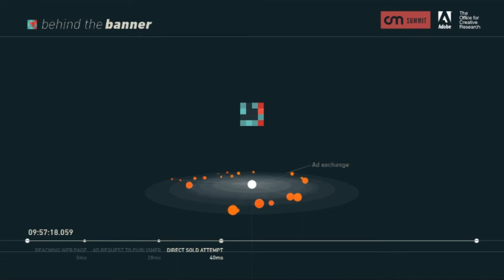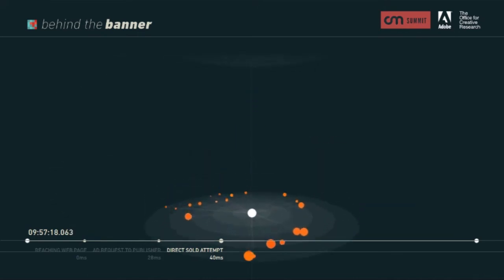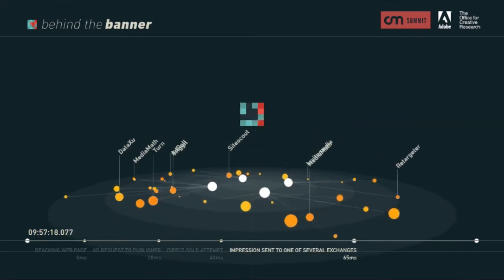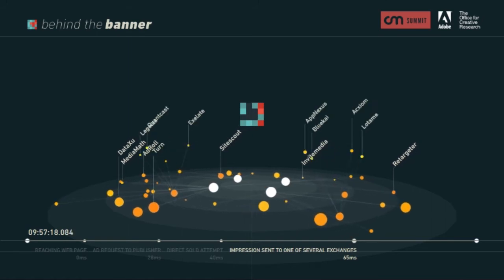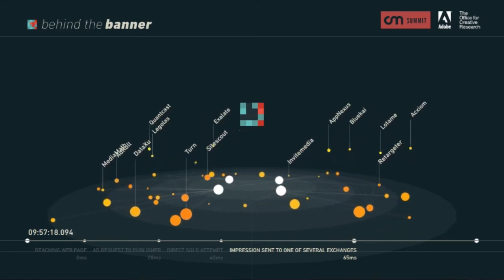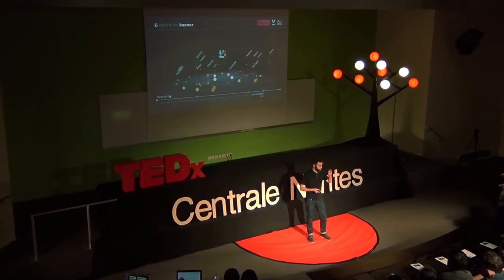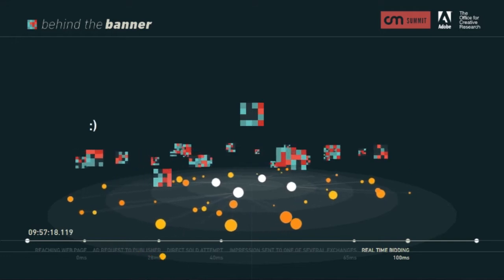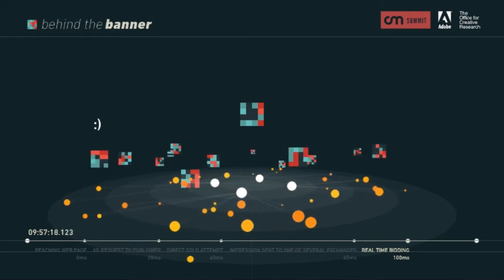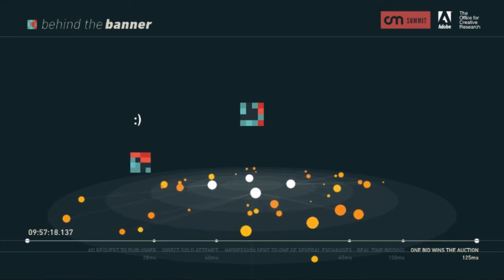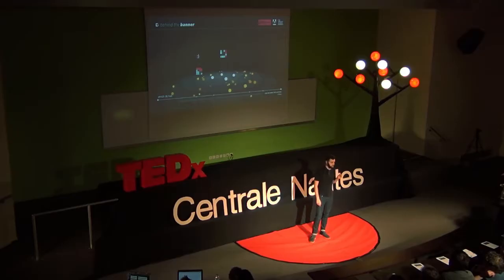Our work reveals a huge network of companies who strive to define who you are and how much you are worth as a consumer. Publishers identify you, put your profile on the marketplace, and then run an auction among hundreds of advertisers — and that whole process happens in a fraction of a second.